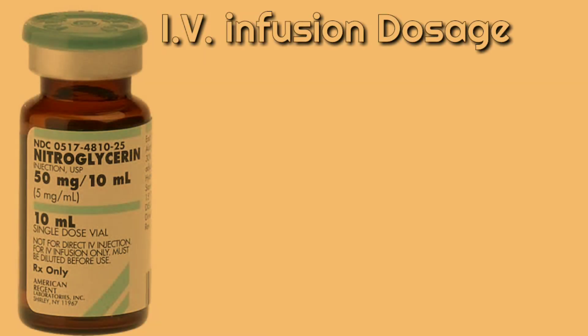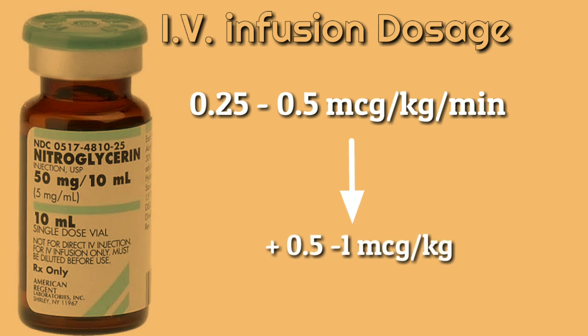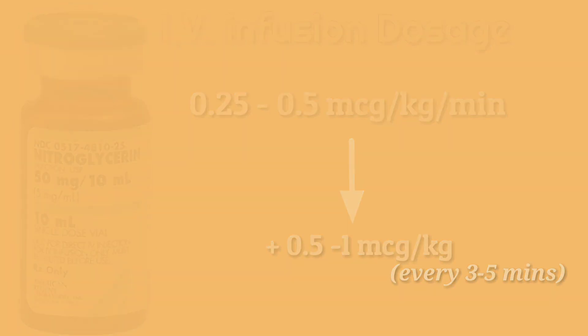IV infusion is given if intolerant of or unresponsive to sublingual nitroglycerin. Start with 0.25 micrograms per kg per minute and increase by 0.5 to 1 microgram per kg every 3 to 5 minutes until response.